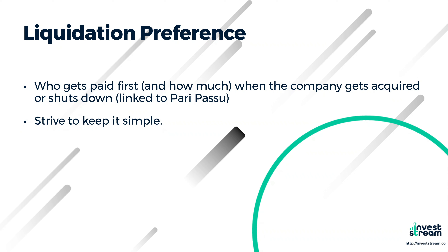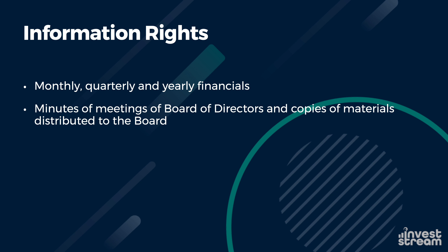You want to stay away from any participating liquidation preference. Keep your liquidation preferences to a non-participating liquidation preference — that essentially means if you own 10% of the company and the company sells for 2,000 rupees, you get your 200 rupees and everyone gets a share equal to their ownership. Try to keep it as simple as possible with a non-participating liquidation preference.